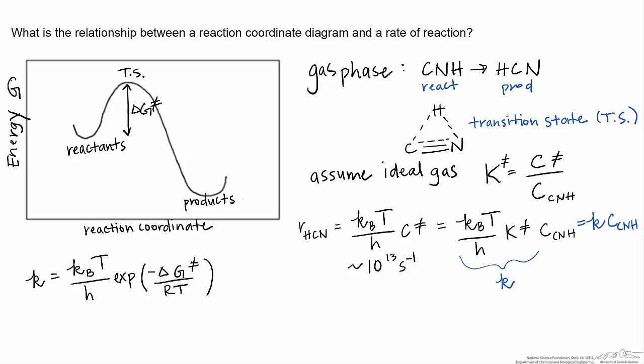To do this, we would just have to use, for example, a quantum chemical software package to estimate the Gibbs free energy of the reactants and the Gibbs free energy of the transition states by inputting this linear structure CNH and this triangular structure transition state and computing their Gibbs free energies.